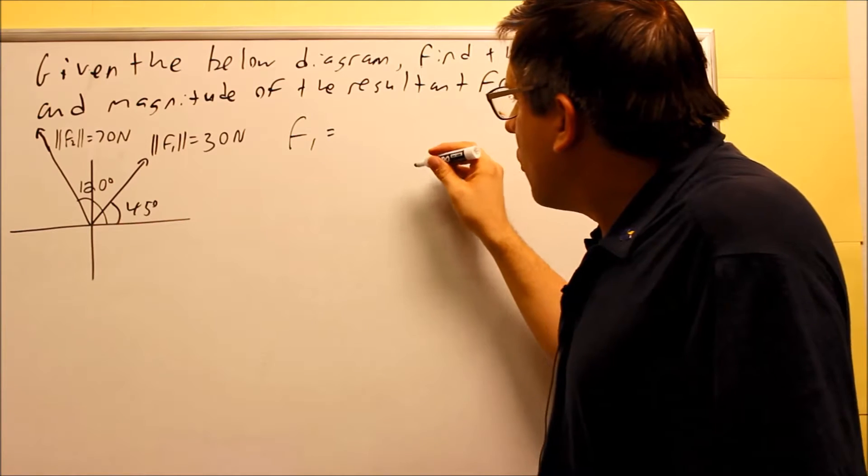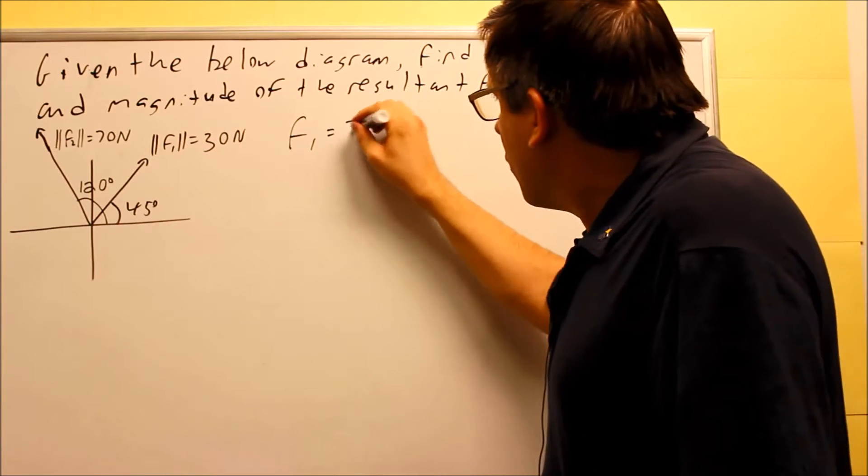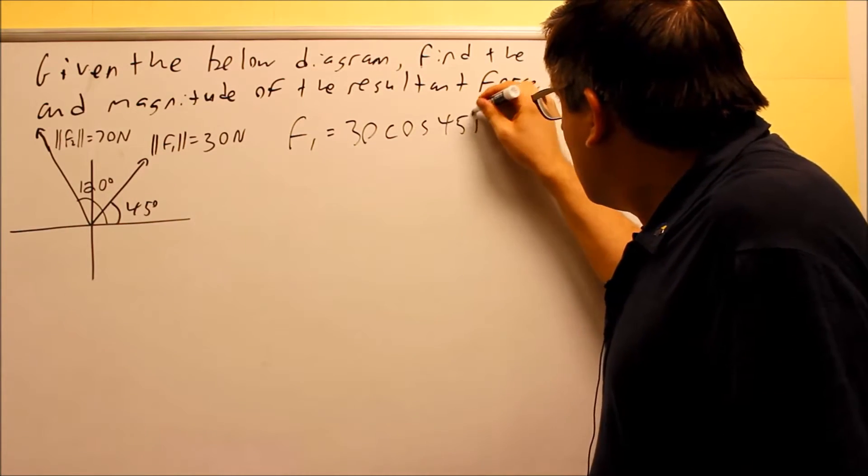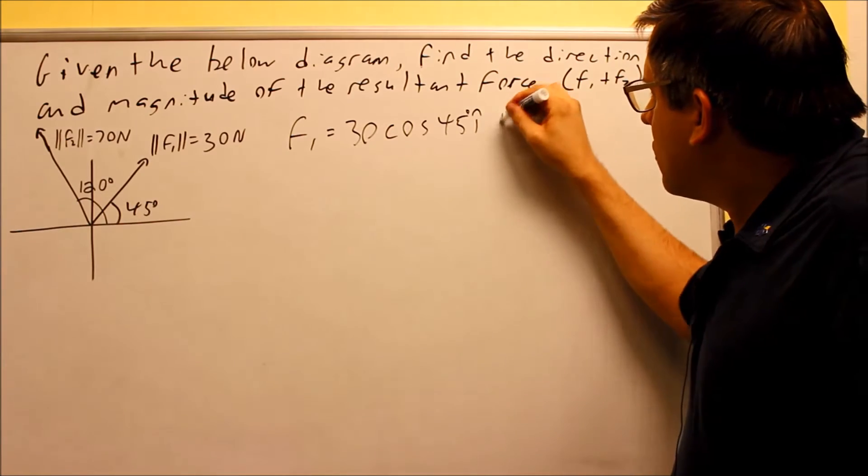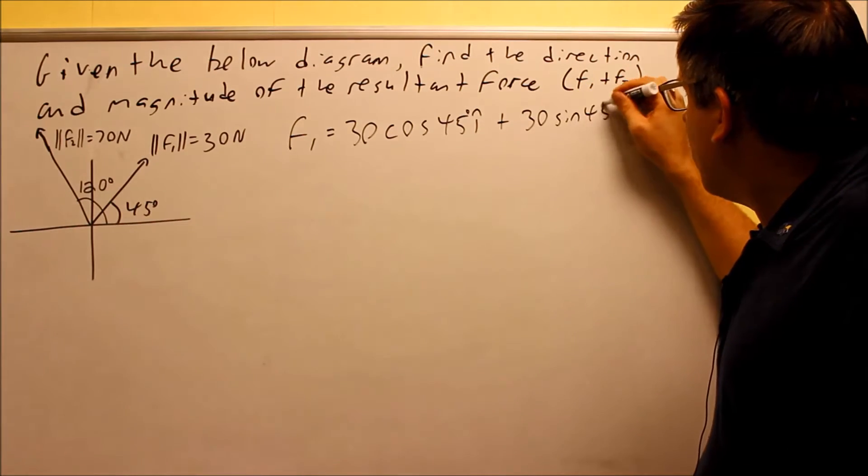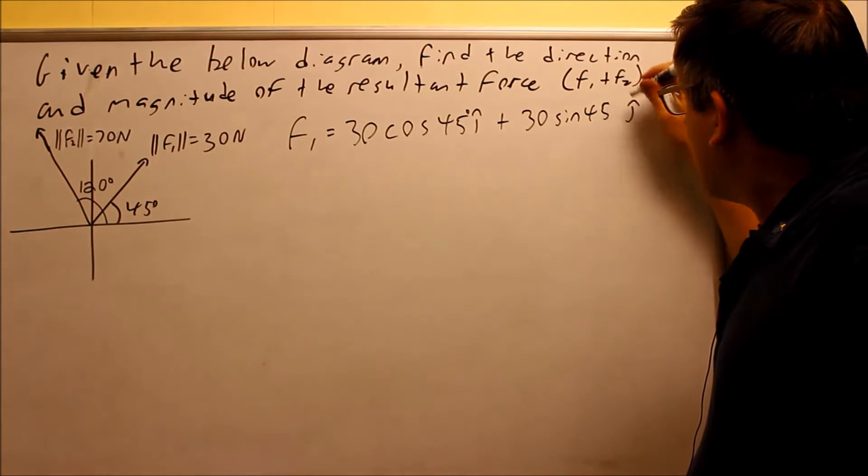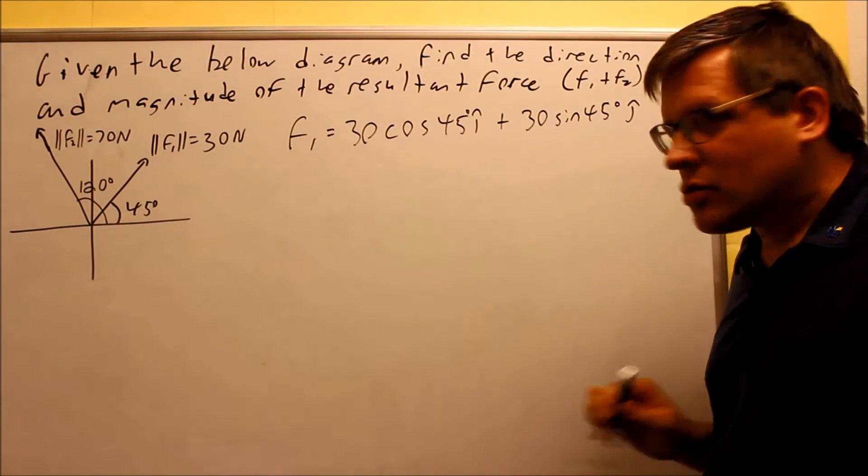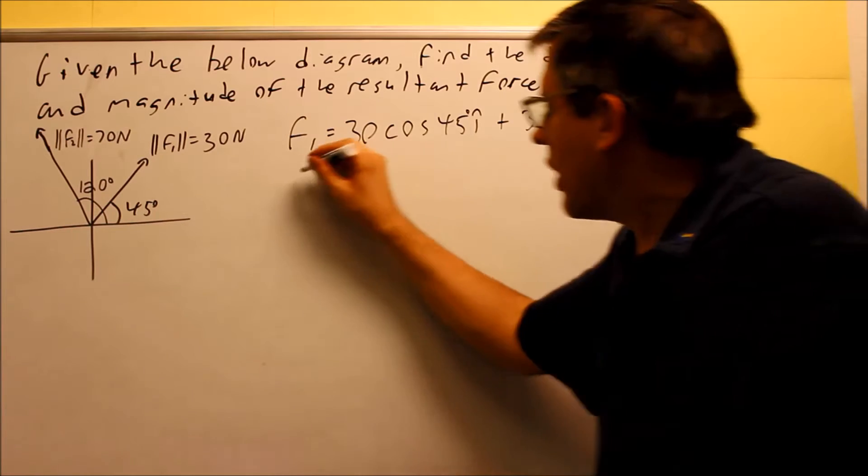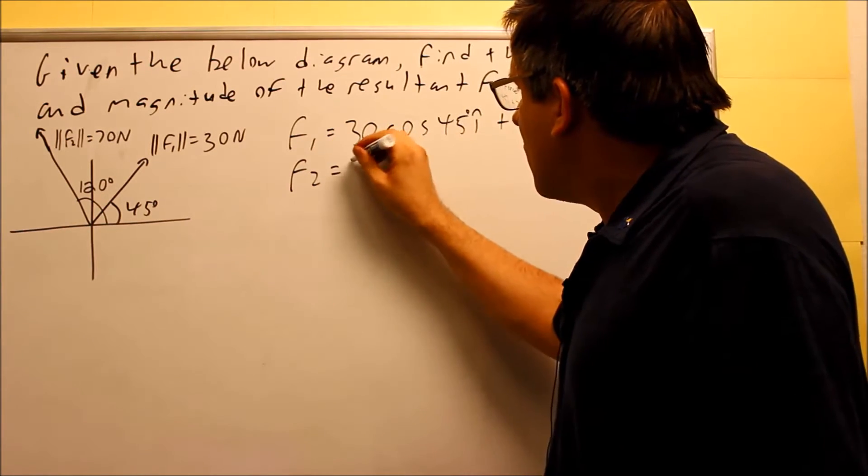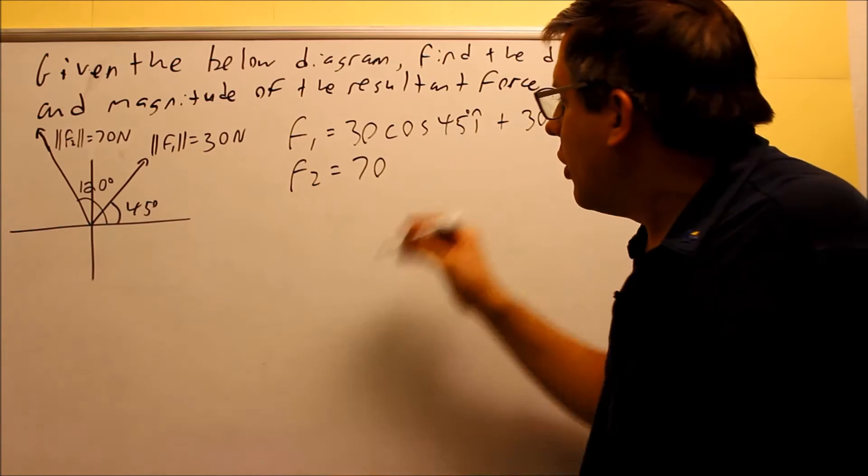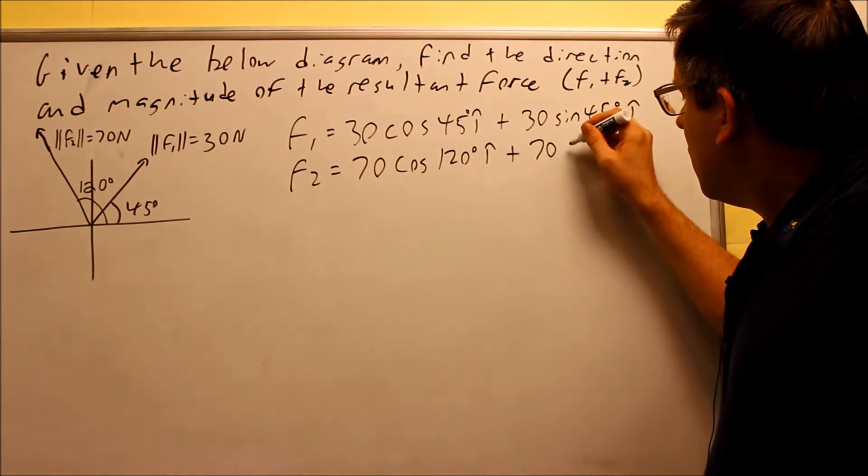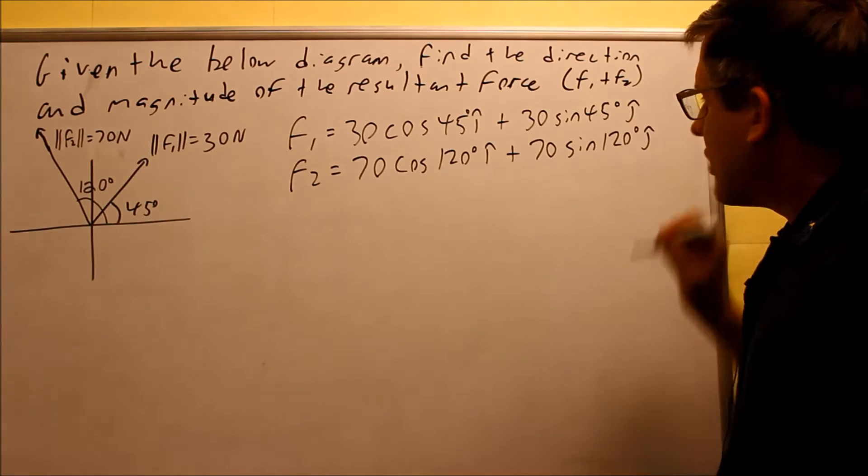So, the first thing we have to do is we must go ahead and write these into component form. So, F1 is going to equal the magnitude of F1. That's going to be 30 newtons and we're going to do cosine alpha. In this case, it's 45 degrees and then you're going to also write 30 sine 45 degrees and that's going to be j. So, that's the way that you could take the first force F1 and write it up and break it up into components by doing that. That's the first force. Now, we also have to do it for F2. That's going to be 70 newtons is the force applied that one and that's being applied at 120 degrees. So, we're going to have 120 degrees i and we're going to do 70 sine 120. That's going to be j.